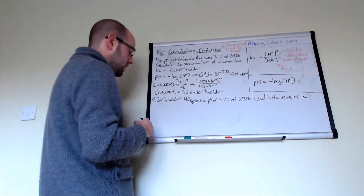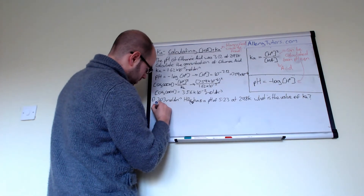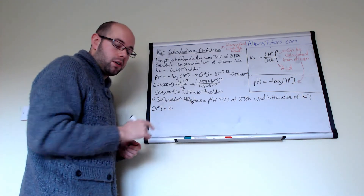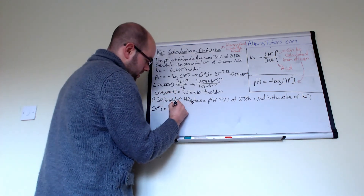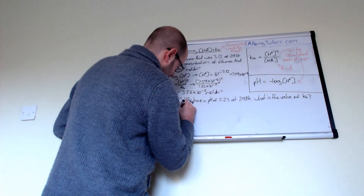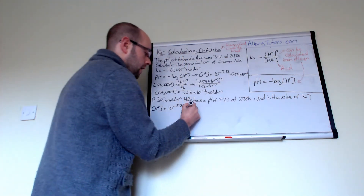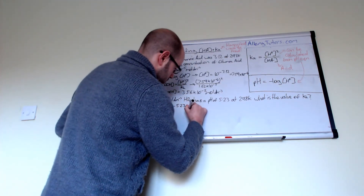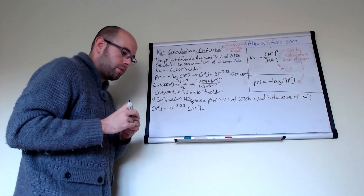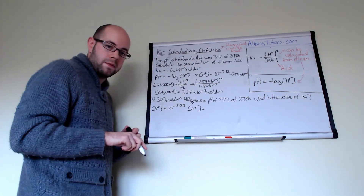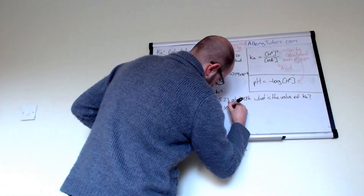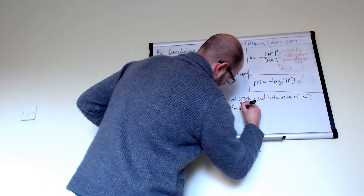We have to use the pH expression to work out H⁺. Rearranging, the concentration of H⁺ equals the anti-log — 10 to the minus pH. The pH is 5.23, and that should give us a concentration of H⁺ of 5.89 × 10⁻⁶ moles per decimetre cubed.